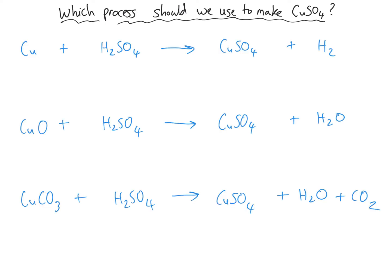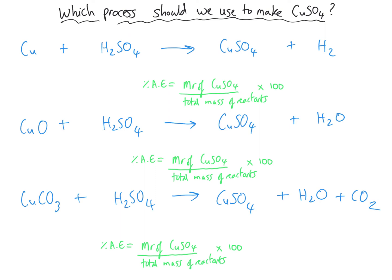Which process should be used to make copper sulfate — maybe for use as a pesticide? We've got three chemical reactions. The first one is copper reacting with sulfuric acid to make copper sulfate and hydrogen. The second has copper oxide reacting with sulfuric acid to make copper sulfate and water. The third has copper carbonate reacting with sulfuric acid to make copper sulfate, water, and carbon dioxide. We calculate the percentage atom economy by dividing the mass of the desired product, copper sulfate, by the total mass of reactants each time. The mass of copper sulfate is 159.6.